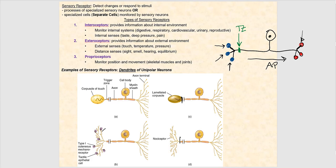Let's look at the dendrites of these unipolar sensory afferent neurons, beginning with figure A. Here is a unipolar neuron — structurally speaking, and functionally speaking, a sensory afferent neuron sending information to the central nervous system. Here is the trigger zone. The corpuscle of touch shown here is the dendrite — also referred to as Meissner's corpuscles, by the way.